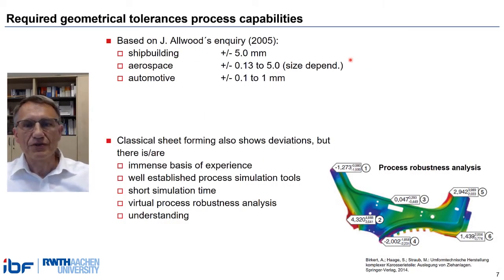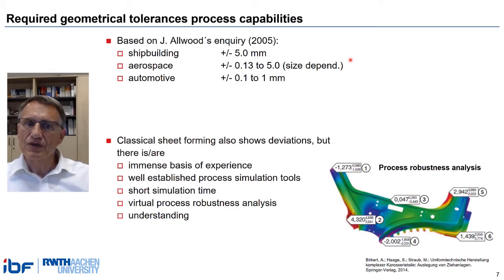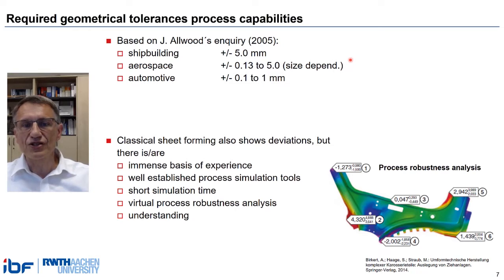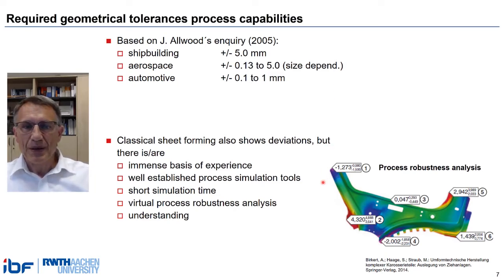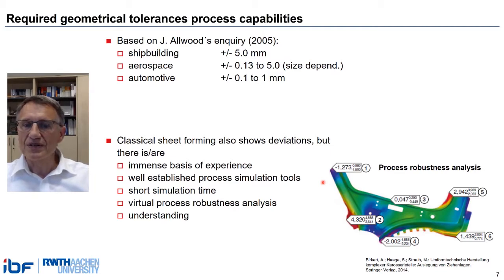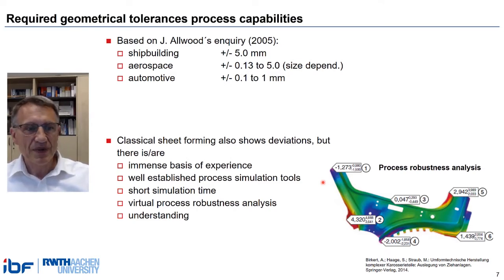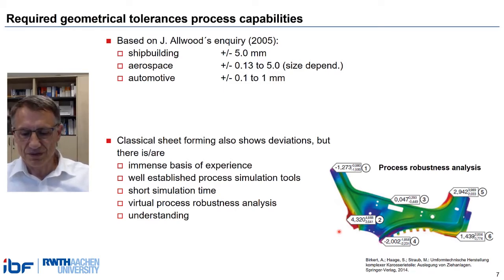The geometric tolerances required strongly depend on the field of application and on the size of the component. In 2005, Julian Allwood published a result of his inquiry, which is still valid today. Those of us working also in classical sheet forming know that deviations occur there too, which may be larger than these values. But for deep drawing and stamping, we have an immense basis of experience and well-established process simulation tools. These tools can simulate in very short time and can even be used to assess process robustness and give expected geometric deviations when material input changes, as shown on the right-hand figure.